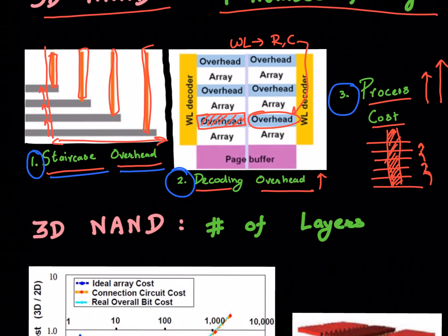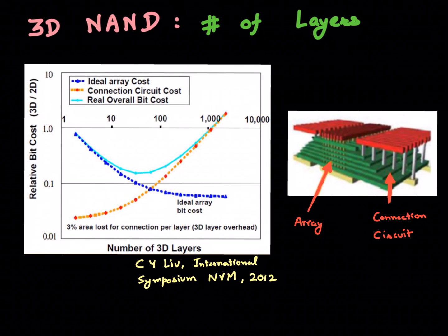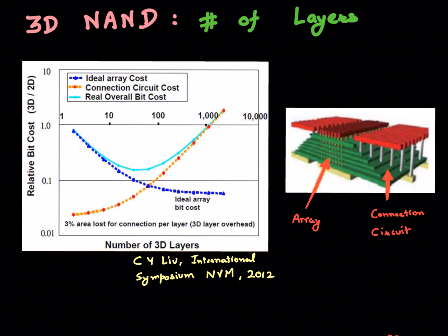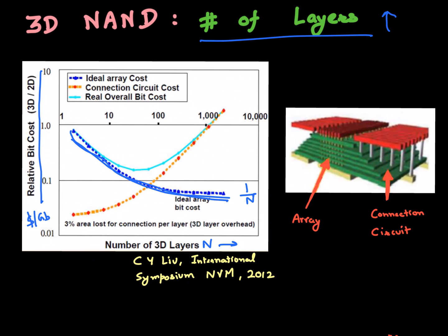If you take these things into account, the picture doesn't look as rosy. In 3D NAND, if you take all these things into account and increase your number of layers, yes, in an ideal world where it had a one over N dependency on the number of layers, this relative bit cost or this dollars per gigabit cost that I've been talking about would keep on decreasing.